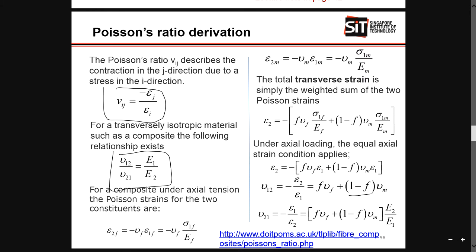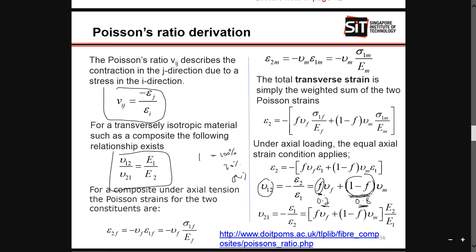Just take note: if you have your fiber ratio, f is your fiber and 1 minus f is your matrix. So if normally it's in terms of 0.something — for example, if your fiber is 0.2, then your matrix should be 0.8. When they add up together it should equal 1, which means 100%. So 0.2 means 20% fiber and 80% matrix — that's the meaning of that.